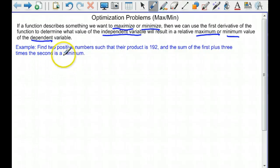Here's an example. We're going to find two positive numbers such that their product is 192 and the sum of the first plus three times the second is a minimum. So I'll let x be the first number and y is the second.